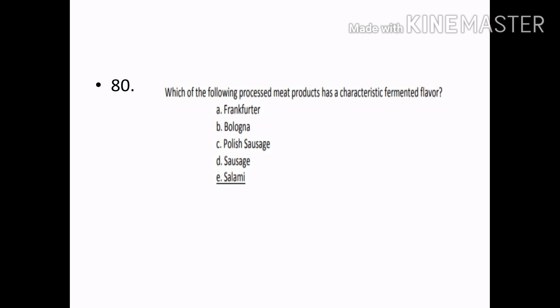Which of the following processed meat products has a characteristic fermented flavor? Options — Frankfurter, Bologna, Polish Sausage, Sausage, Salami. Correct answer: Option E — Salami.